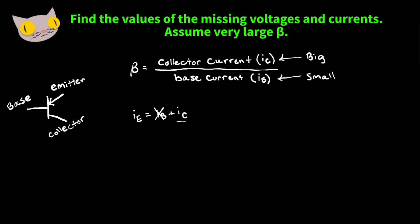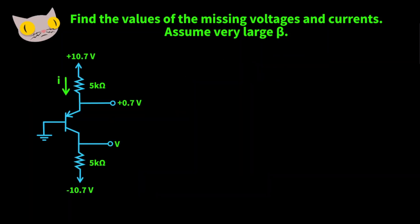Because our common emitter gain is so large, we can say the collector current is equal to the emitter current. Let's move on to the problems. Here's our first transistor circuit. We need to find this current going into the emitter pin — this is the emitter current — and we want to find this voltage here. Let's start with the current.